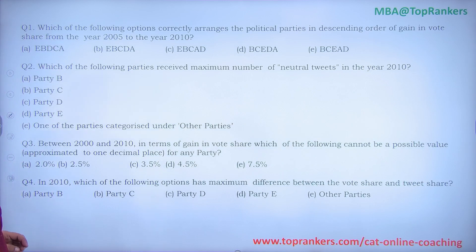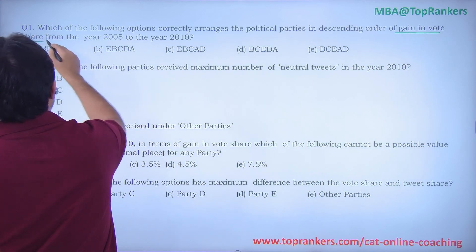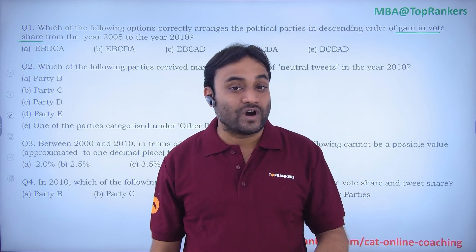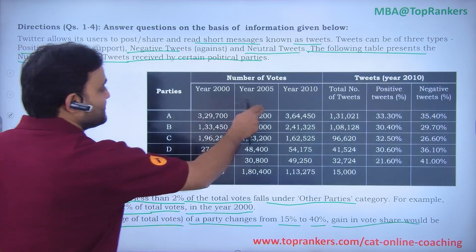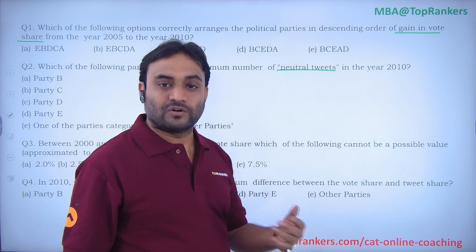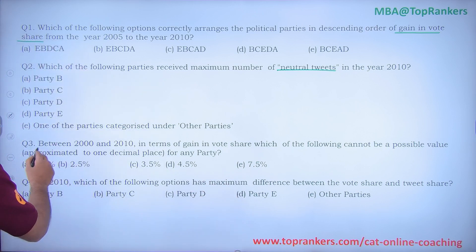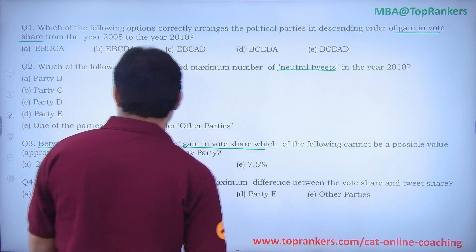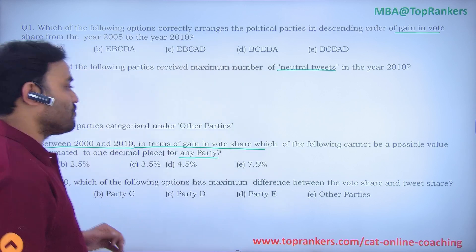Let's check the questions. First: which of the following options correctly arranges the political parties in descending order of gain in vote share? For this we need vote percentage in one year and vote percentage in the second year, so we need to find the percentage share of each party in each year. Second: which party received the maximum number of neutral tweets? Third: between 2000 and 2010, which value cannot be a possible approximated gain in votes for any party?